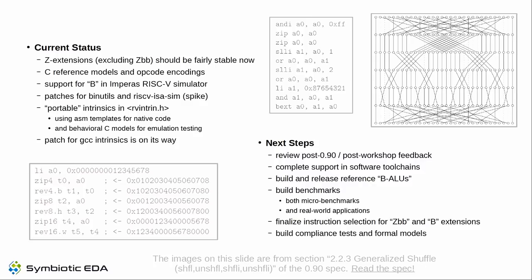Next steps: we need to review feedback from this event — please read the spec and send feedback now. This is a critical time because we're implementing simulators and other tools, and starting to build hardware. Feedback sent now can be considered; feedback in six months will be too late once hardware and tools are built. We will complete software tool support, build reference ALUs for the B extension that are permissively licensed so people can use them directly in their cores, which should help with adoption.